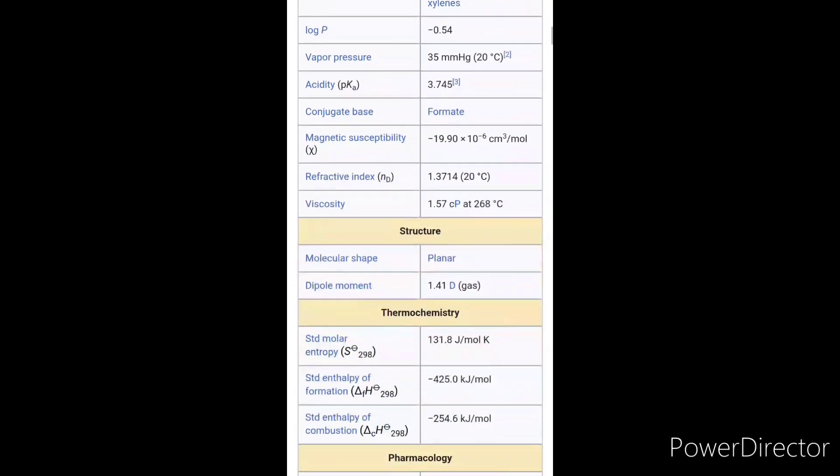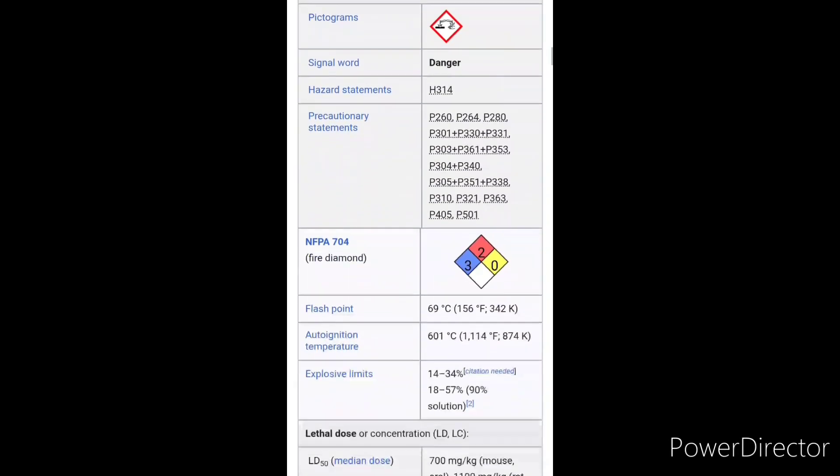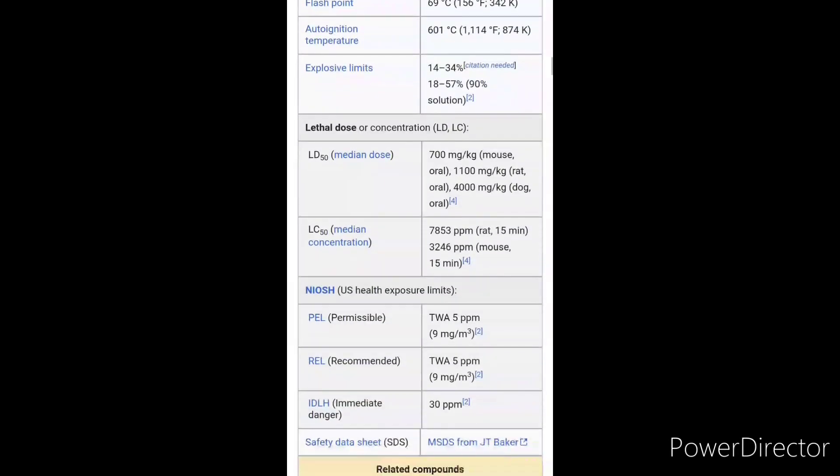The industrial way to make it is by reacting carbon monoxide and methanol under a strong base. It was first obtained by John Ray in 1671.